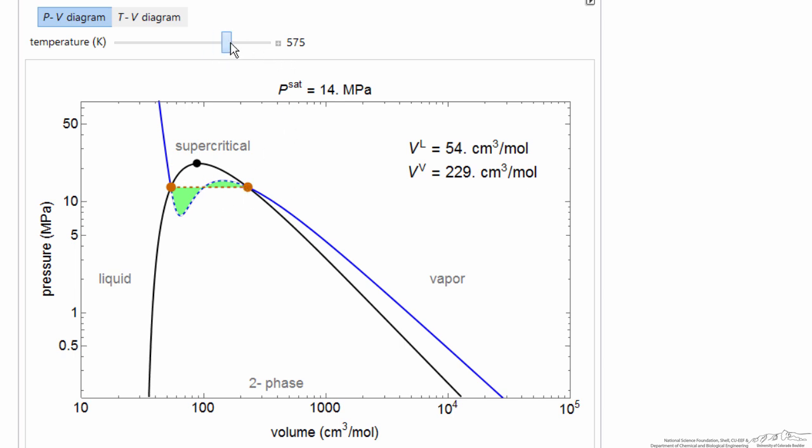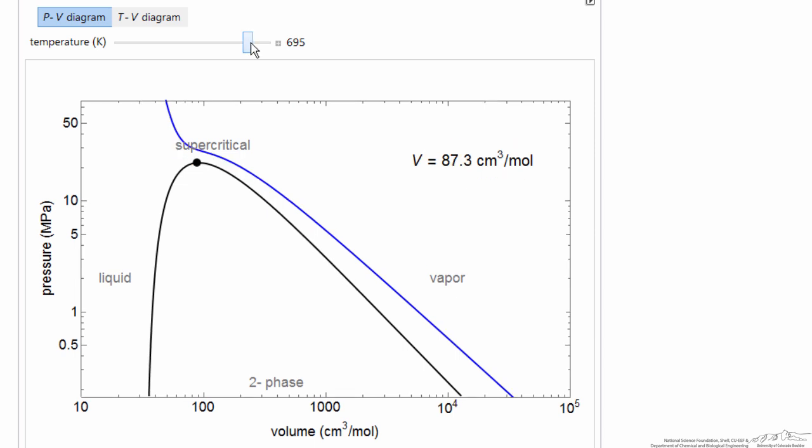And if I increase the temperature enough, now that's at the critical temperature and then we move higher up or above the critical temperature and the supercritical region up at the higher pressures.